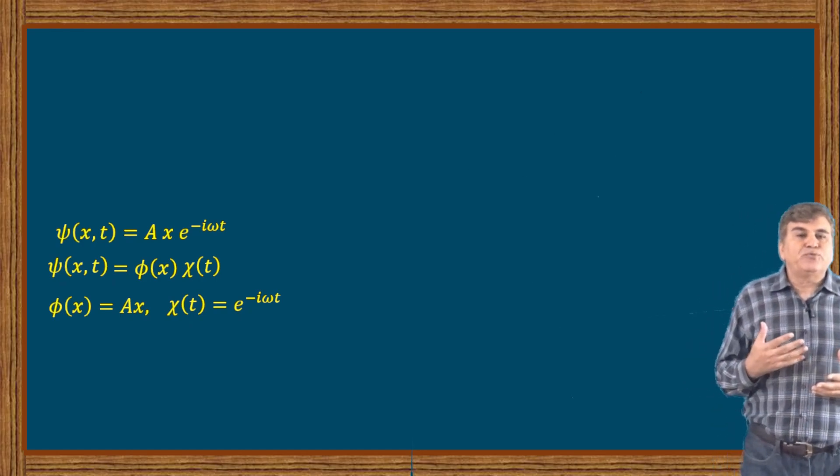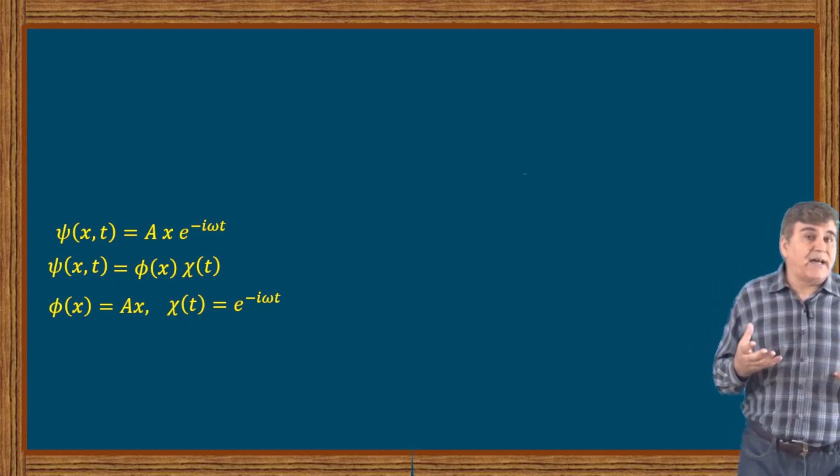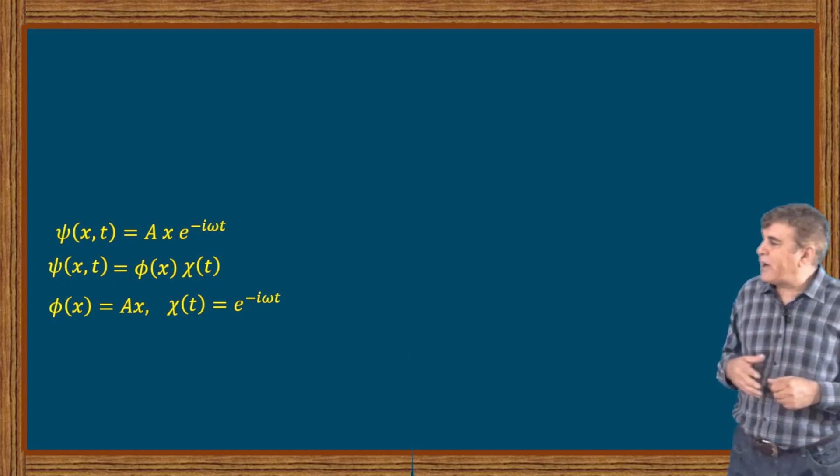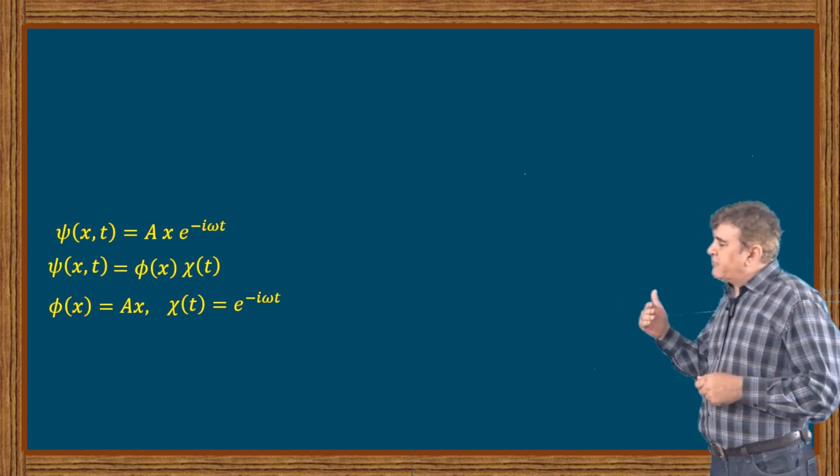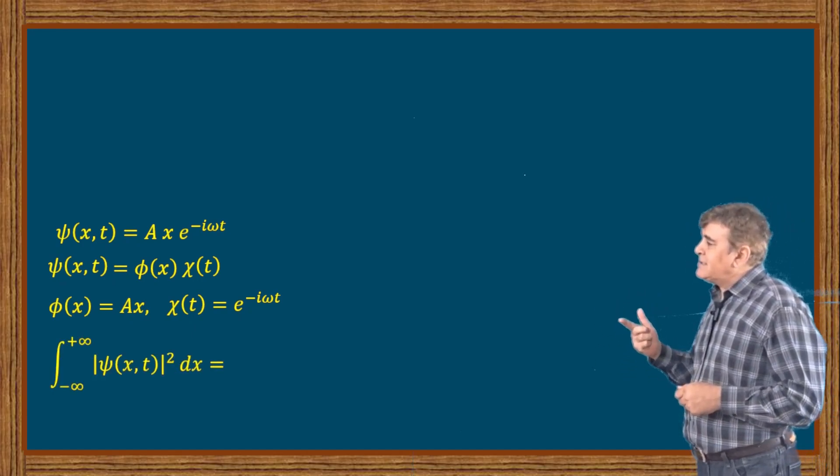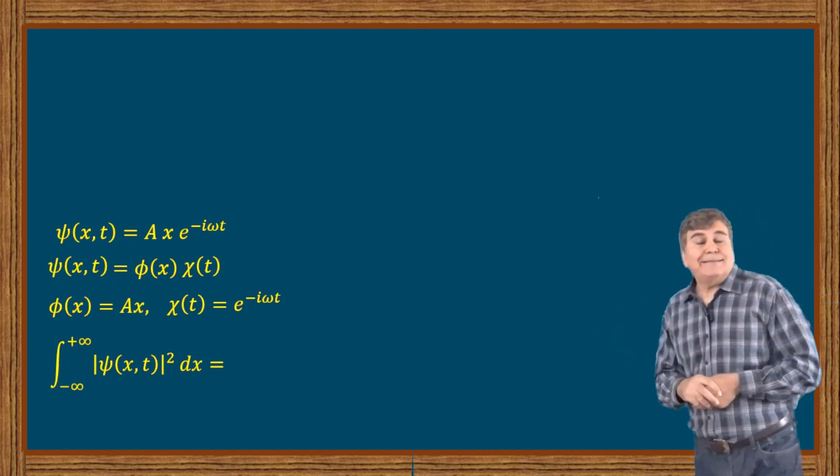To do this, I need to proceed as follows: I want to integrate the modular square of the wave function. So I write the integral from minus infinity to plus infinity of |ψ(x,t)|² dx over the whole space.